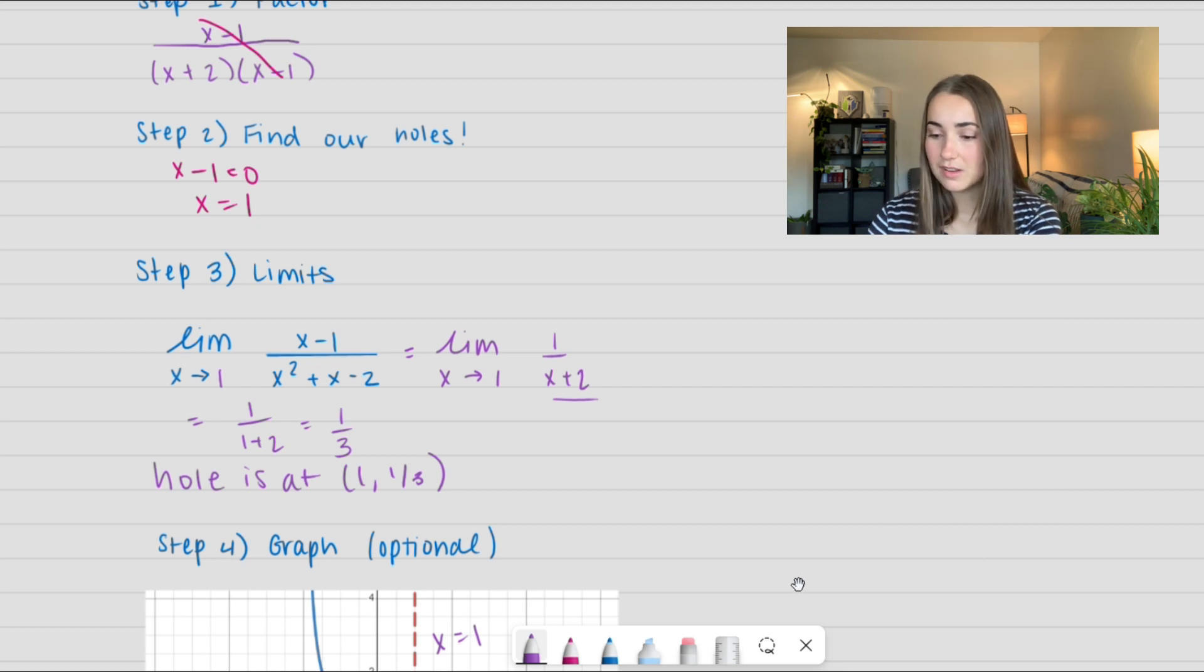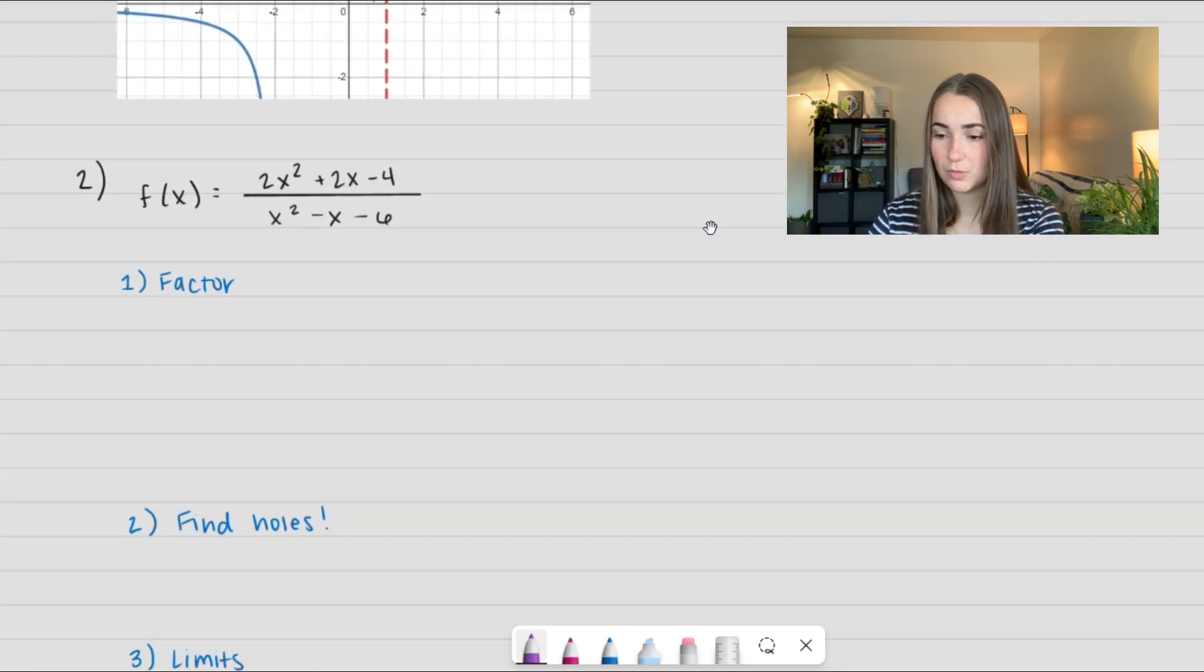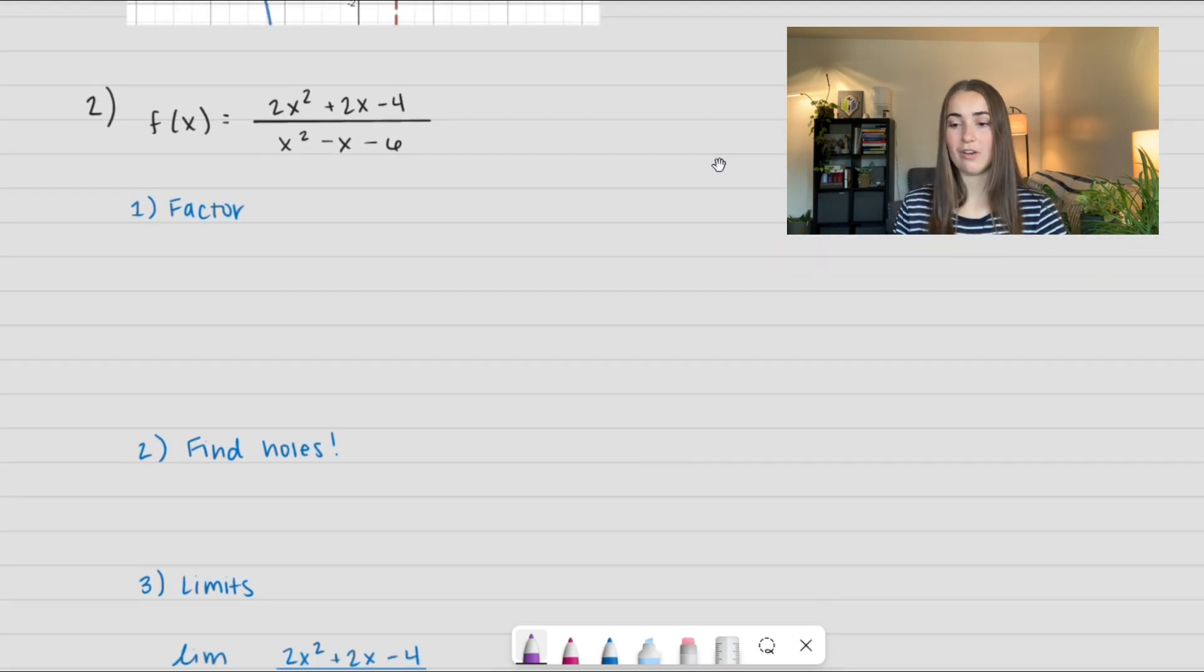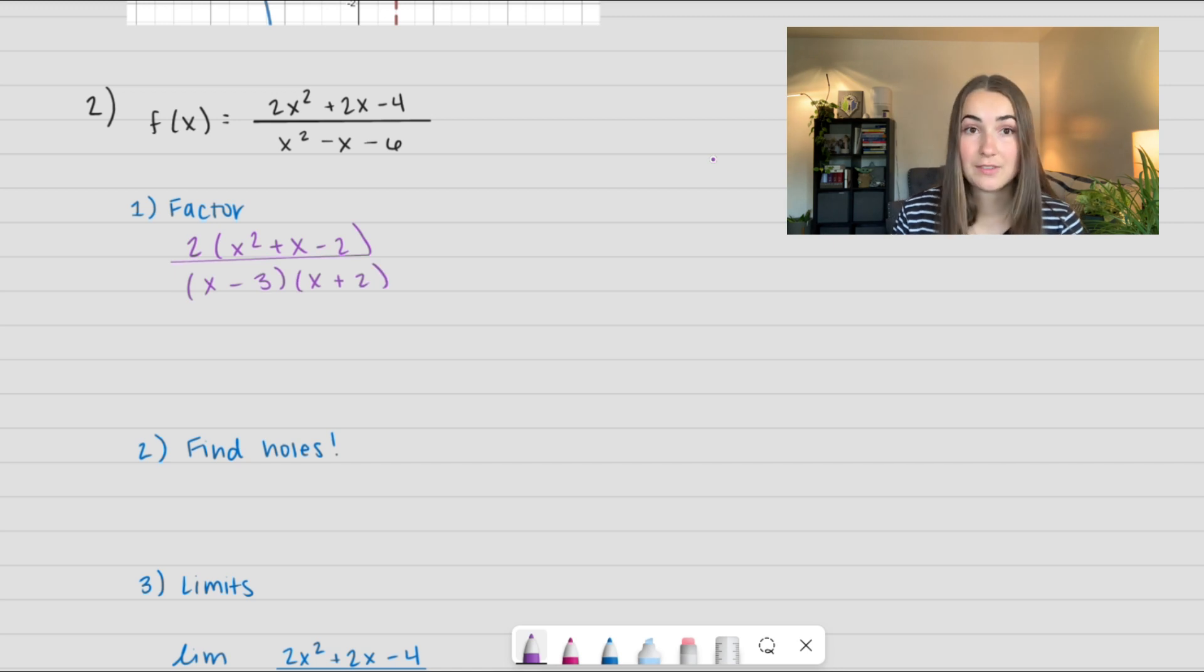Let's see another example. Here we have (2x²+2x-4)/(x²-x-6). So let's go ahead and factor. I'm going to pull a 2 out of the numerator and factor the denominator. So I get (x-3)(x+2). Now I'm going to factor the numerator. So in the numerator I get (x+2)(x-1) divided by (x-3)(x+2).